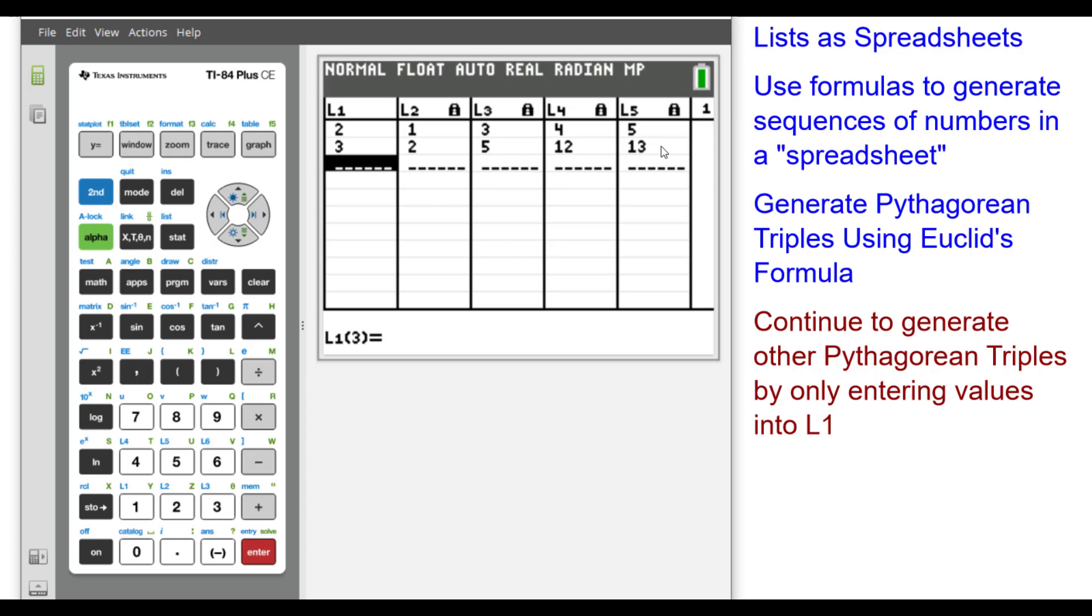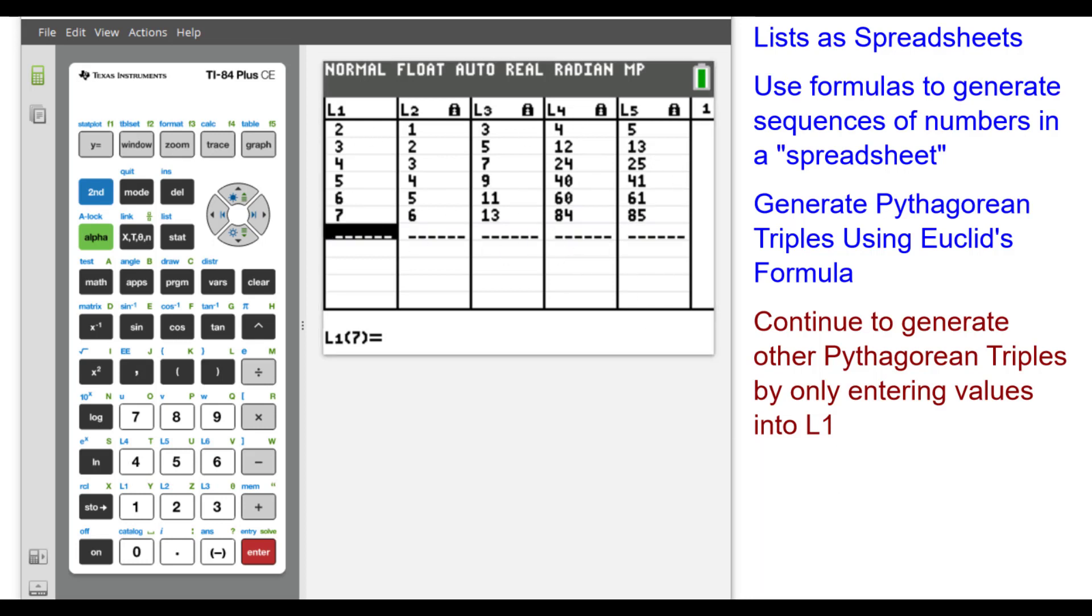You can see I'm getting 5, 12, 13. 4 generates 7, 24, 25. And so on. And you can see I entered several more numbers and got several more Pythagorean triples.